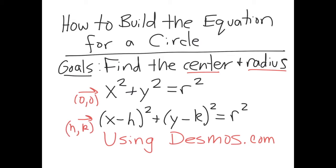For instance, two comma three or seven comma fifteen. Then we're going to look at using Desmos.com to graph your circles to make sure that they're exactly the way you'd like them to be.